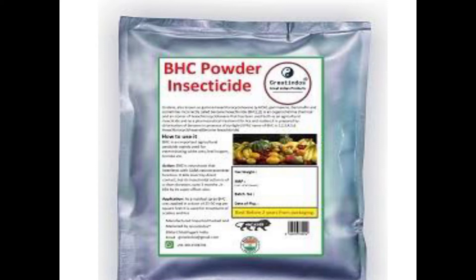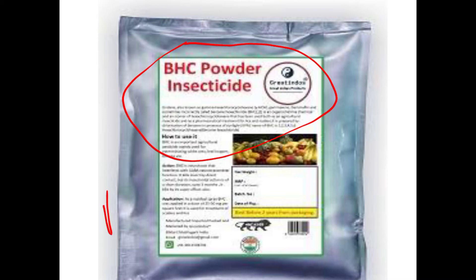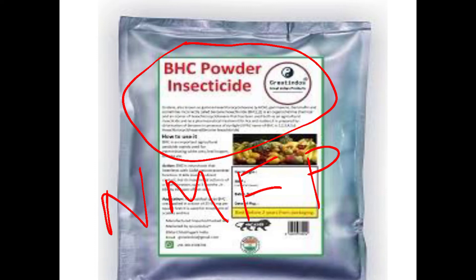This is BHC insecticide. This was introduced in 1959 by the National Malaria Eradication Programme (NMEP) and was used until 1995 to 1996 in smaller amounts. This insecticide is a very toxic, highly toxic, non-specific organochlorine insecticide used mostly for a wide variety of agricultural applications.